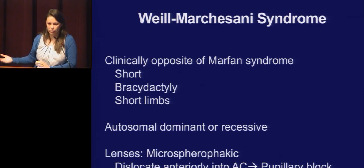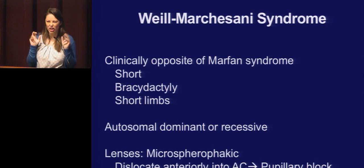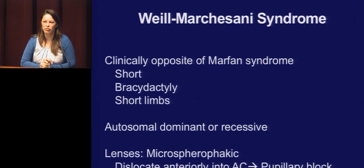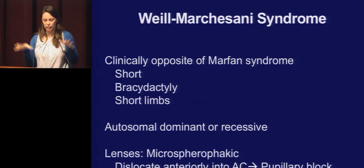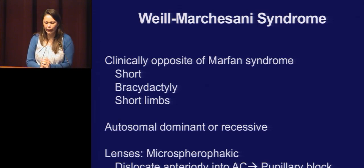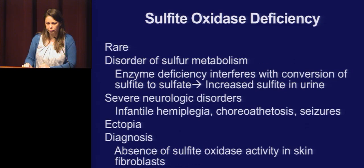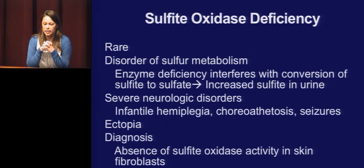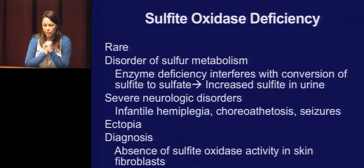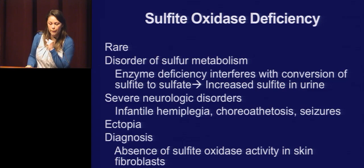Weill-Marchesani syndrome is basically the opposite — these patients are short, stocky with short limbs and short stubby fingers. We have several patients from Lancaster where this runs in families. They are microspherophakic, and the lens can dislocate into the anterior chamber causing pupillary block. Prophylactic laser is recommended. Sulfite oxidase deficiency — important to know for testing but really rare. It's a disorder of sulfur metabolism with severe neurologic disorders. Diagnosis is made with skin testing. Unfortunately these patients have irreversible brain damage and die young.